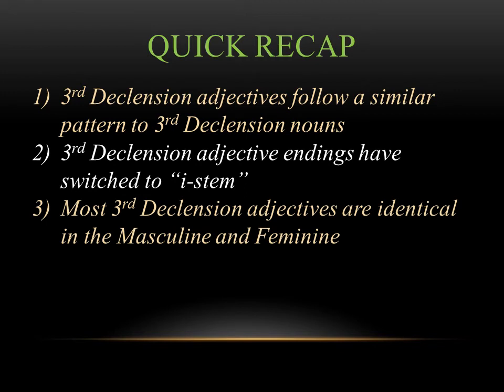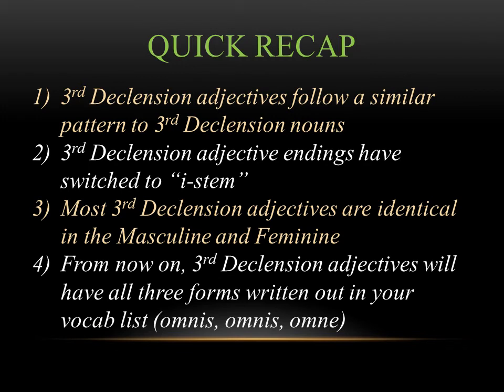Most third declension adjectives are identical in the masculine and feminine, as shown at the beginning of that chart. From now on, you want to notice that third declension adjectives will have all three forms written out in your vocab list. For instance, one vocab word we've seen is the word for all — omnis — and in the vocab it writes out omnis, omnis, omne. What those three endings do is show you the masculine and feminine, which is omnis, and then the neuter, which is omne. This will help you remember that in the nominative singular, masculine and feminine adjectives in the third declension end in IS, while in the neuter they end in E. Make sure you're paying attention to that in the vocab list.